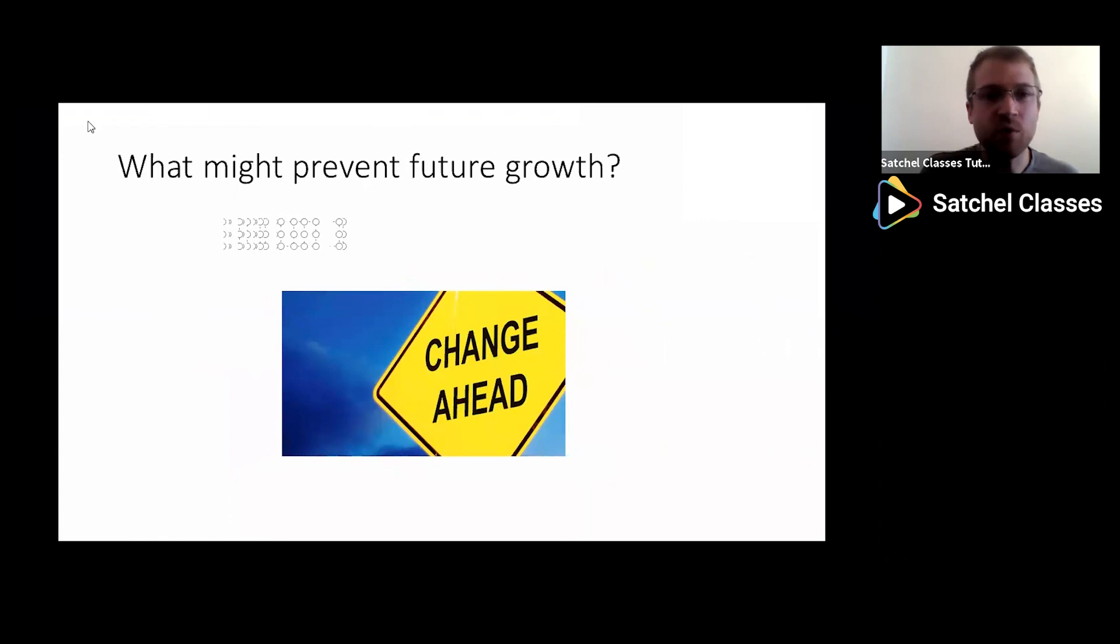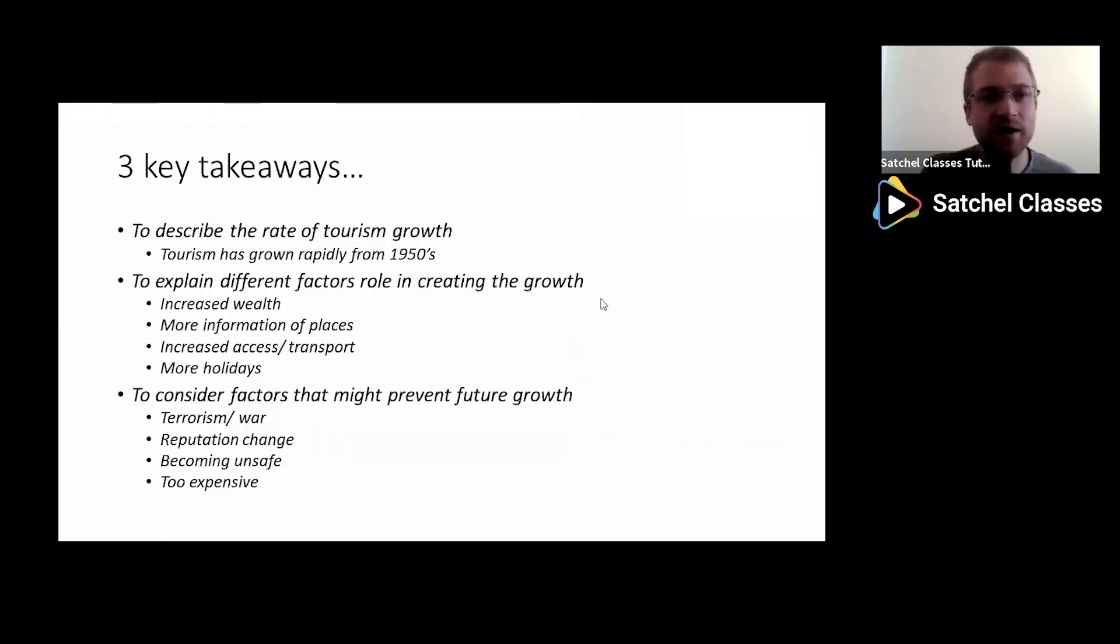So we'll just have a quick summary before we end. So we have had a rapid growth in tourism from the 1950s, post-World War II. And as wealth has increased, we've got more information of places, more holiday time given for people and increased access and transport globally into these different sites. This is basically creating growth in tourism. However, there are certain things that might prevent future growth. For example, terrorism, war, reputation change, becoming too expensive or becoming unsafe. Thank you very much for listening. Enjoy the rest of your day.